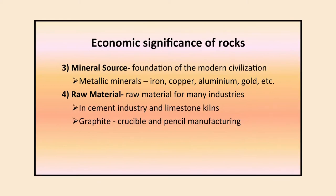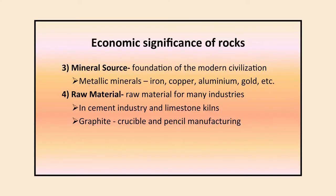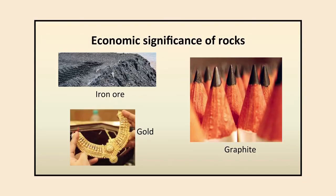Third, rocks are a mineral source for various industries — the foundation of modern civilization started with mineral resources. Iron, copper, aluminum, and gold are derived from rocks. Fourth, rocks provide raw material for industries like cement, and graphite is used for crucible and pencil manufacturing. Iron ore is used in various industries, pencils are made with graphite, and gold is used for ornaments and various industrial and chemical processes.